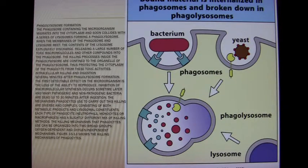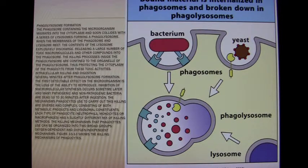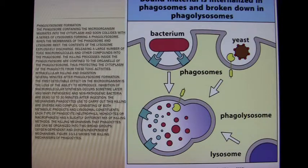Here we show phagocytosis in a little bit more detail. The phagolysosome is holding our pathogen and the lysosome is on its way to the phagolysosome to join up and release a toxic payload of lysozyme to kill the said pathogen.